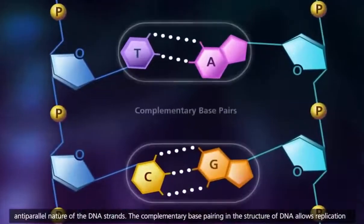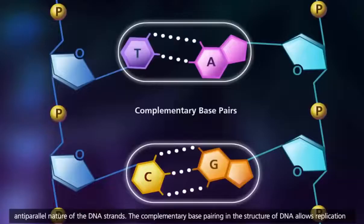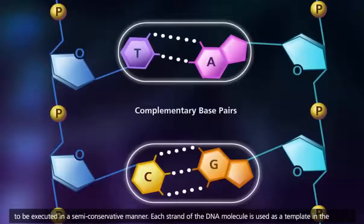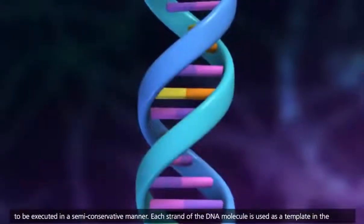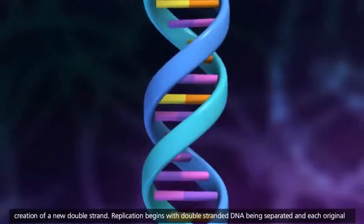The complementary base pairing in the structure of DNA allows replication to be executed in a semi-conservative manner. Each strand of the DNA molecule is used as a template in the creation of a new double strand.